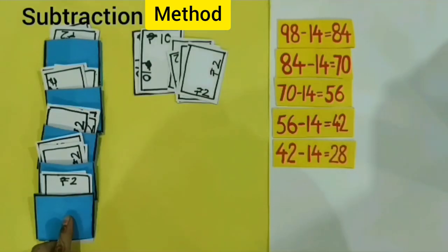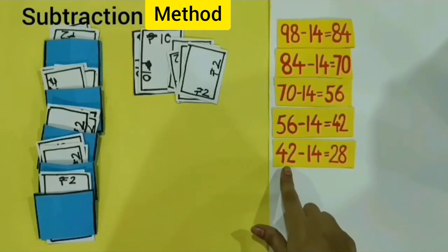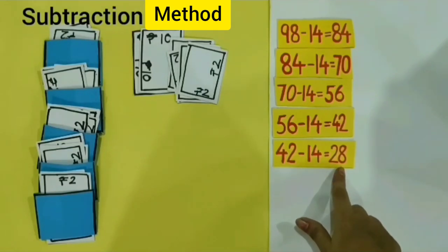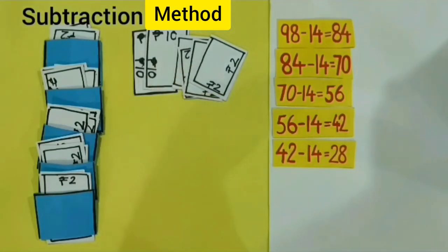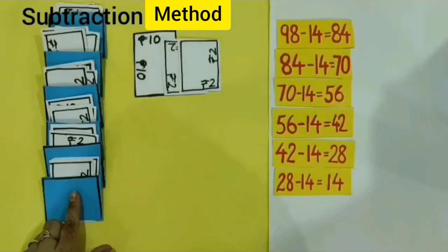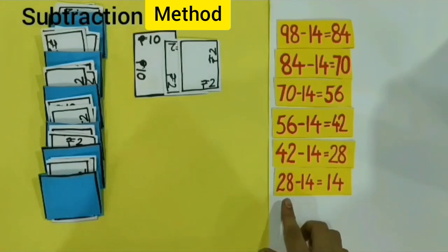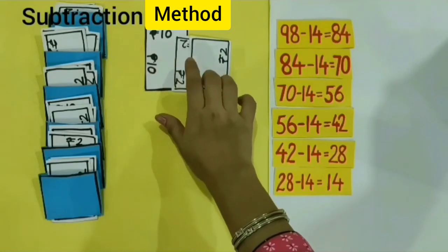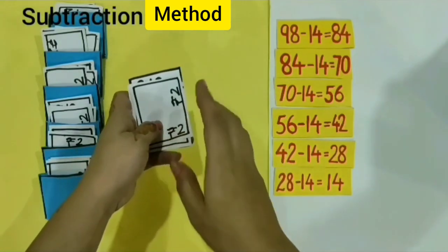I have put 14 rupees in the fifth card. How many rupees are left? 42 minus 14 is equal to 28. I have put 14 rupees in the sixth card. How many rupees are left? 28 minus 14 is equal to 14. I have put 14 rupees into the seventh card.